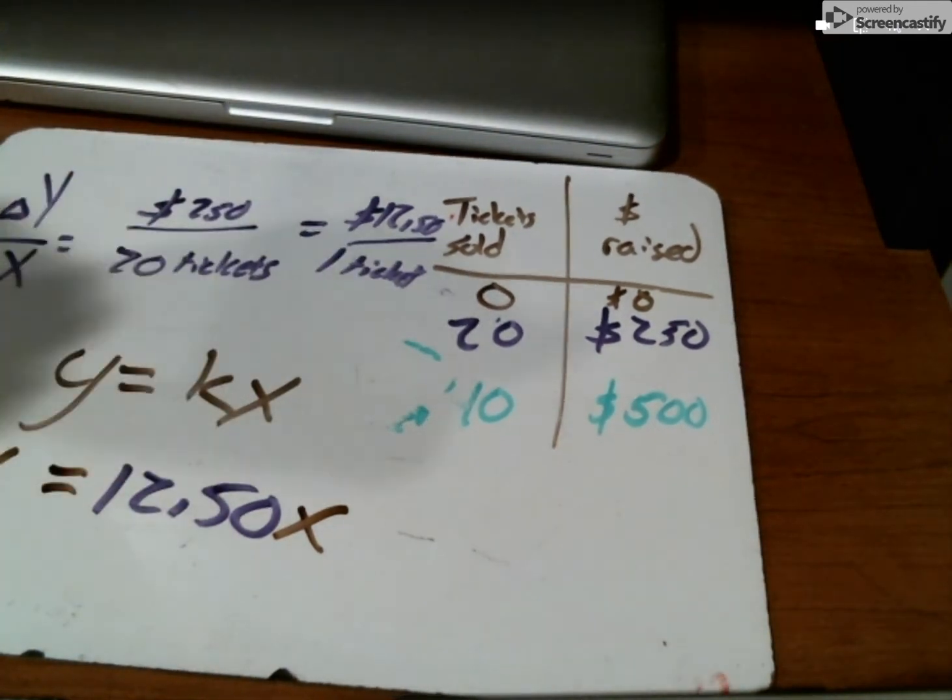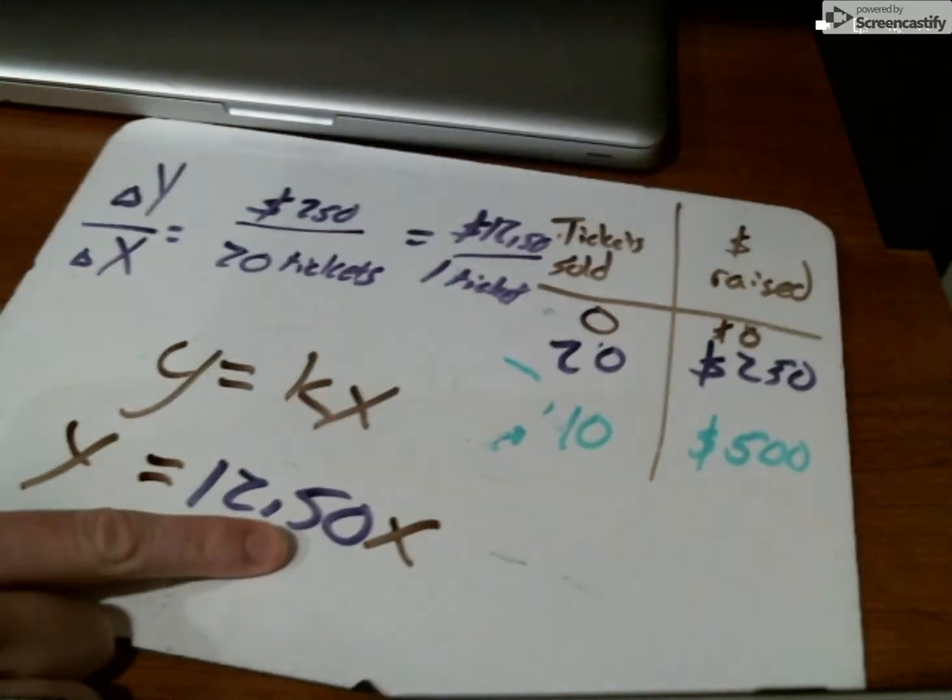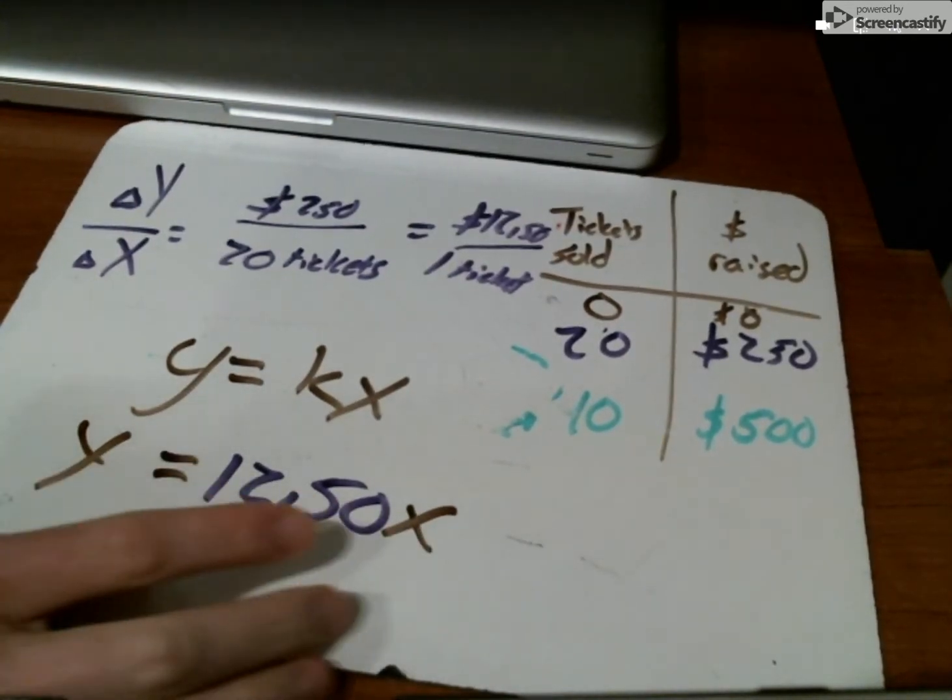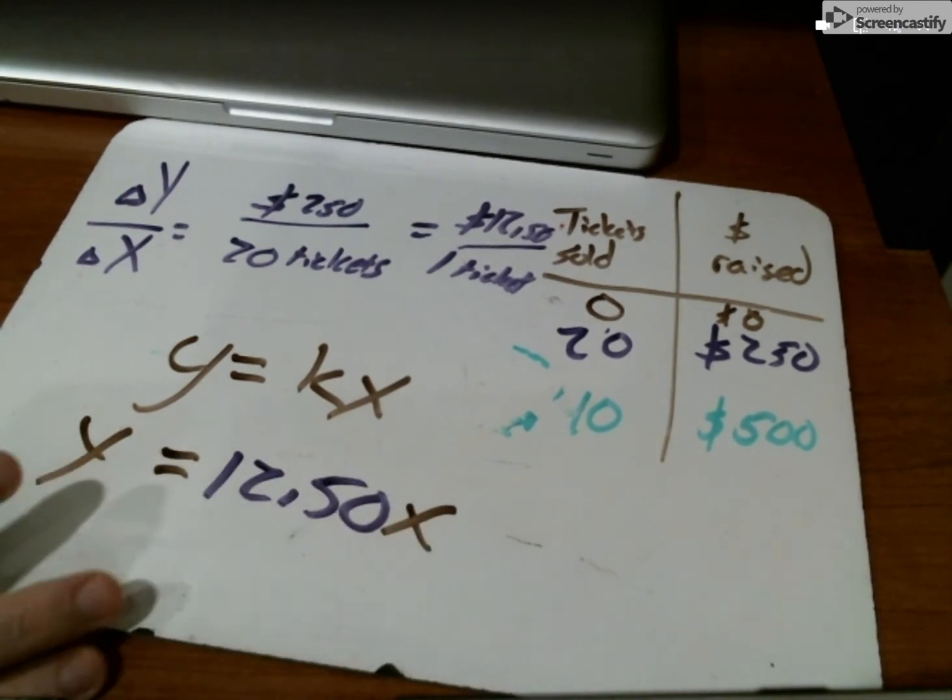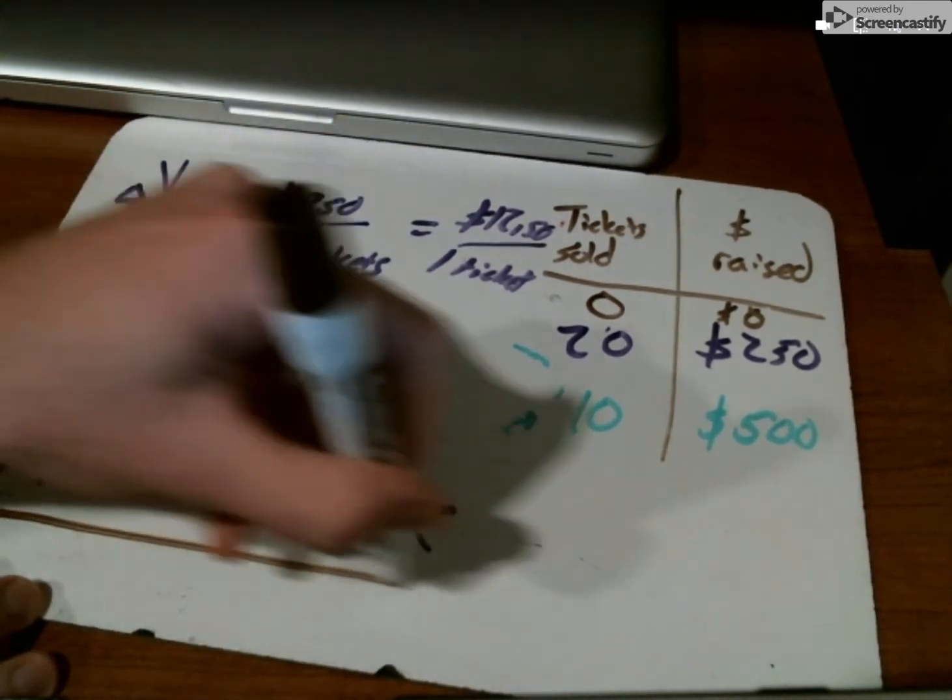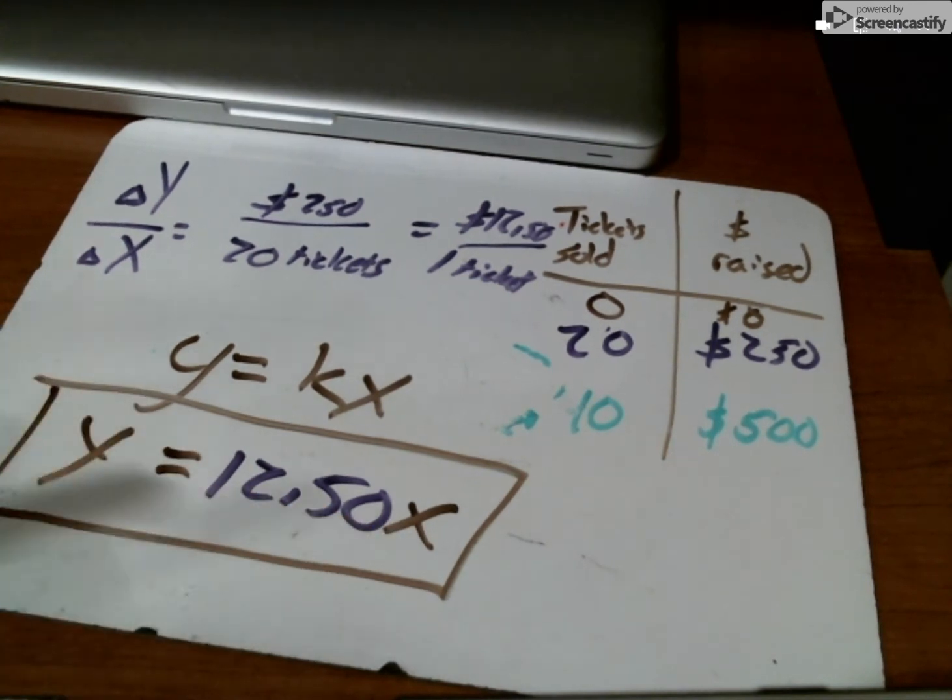So to get the cost, we take our twelve dollars and fifty cents per ticket and multiply that twelve dollars and fifty cents by the number of tickets, and that equals our cost. If we're looking for an equation: y equals twelve point five multiplied with x.